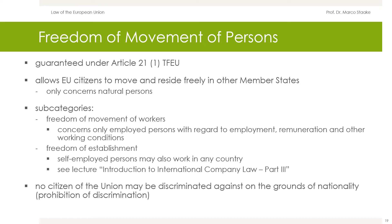The free movement of persons is guaranteed under Article 21 TFEU; it allows citizens of member states to move and reside freely in other member states. The freedom of movement of persons only concerns natural persons. Article 45 TFEU regulates the free movement of workers as a subcategory, concerning only employed persons; with regard to employment, remuneration, and other working conditions, employees have the right to live and work in any member state. With the establishment of the European Single Market, self-employed persons may also work in any country — this is the freedom of establishment.